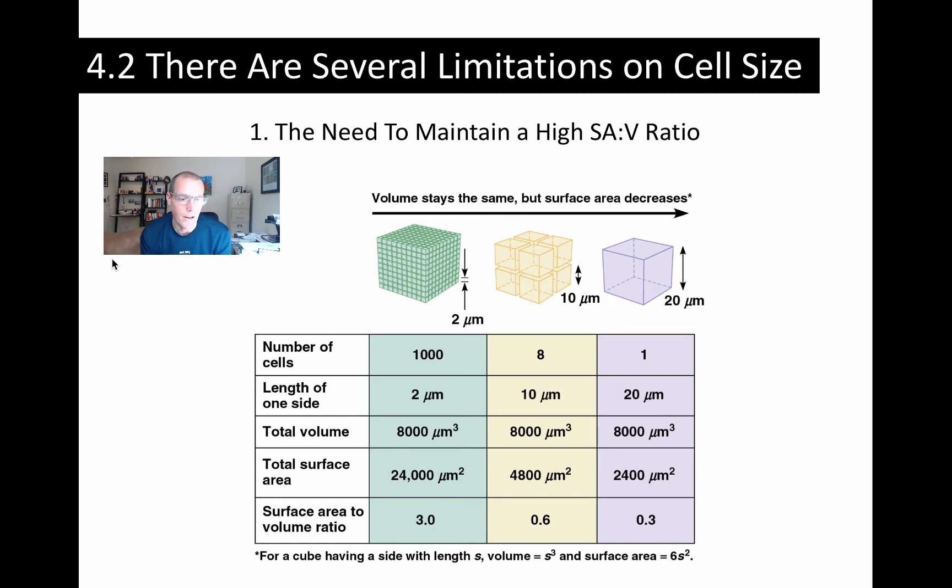Now, if we take our giant 20 micrometer cell and we break it up into lots of 2 micrometer length width and depth cells, volume stays the same. The total surface area has gone up tenfold, tenfold increase relative to having just one giant cell. And so now the surface area to volume ratio for this large group of cells is 3.0.